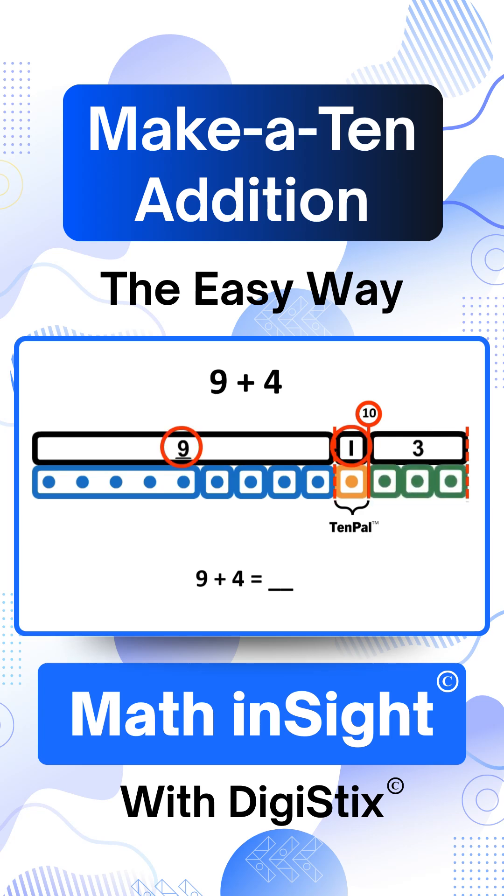To find the total, we start by making a 10. We add 9 and its 10-pal, which is 1. 9 plus 1 is 10, which we show like this.